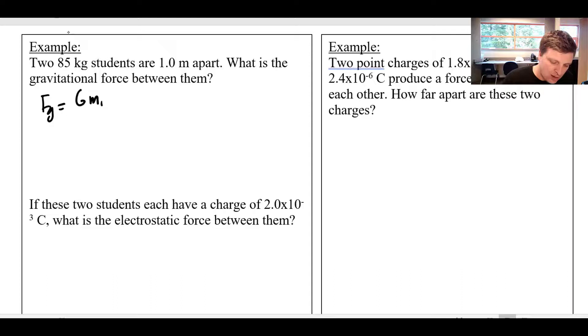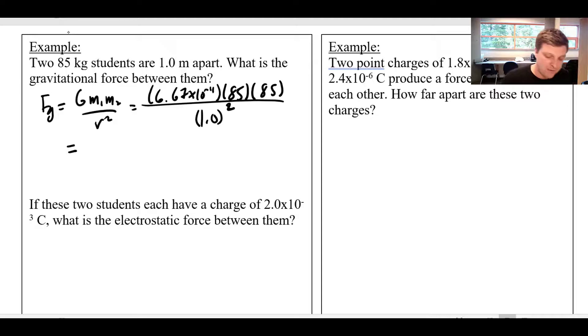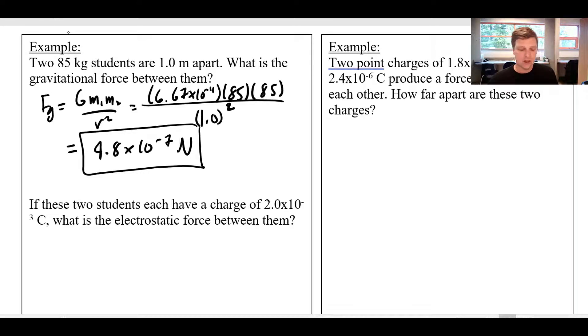Fg is going to equal G m1 m2 over R squared. So this is going to be 6.67 times 10 to the negative 11 times 85 times another 85 divided by 1 squared. This is going to be a very small amount. This is like 4.8 times 10 to the negative 7 newtons. So the gravitational attraction between the two students, very, very small.